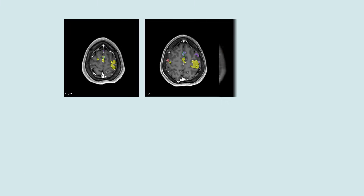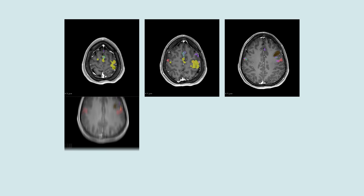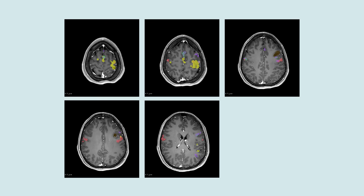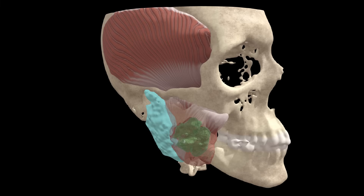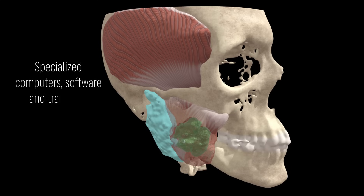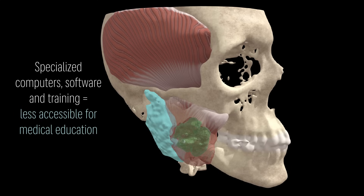Medical scans show a series of 2D images representing a cross-sectional view of the body. So, identifying specific features, how different structures are interrelated, and how the image relates to the patient's body is not straightforward. While 3D medical images can sometimes be created by stacking 2D images together, this typically requires specialized computers, software, and training, making such imagery less accessible for medical education.